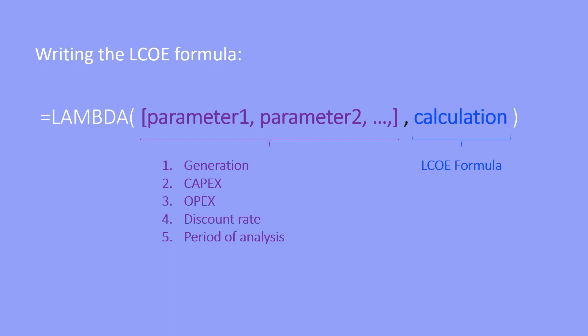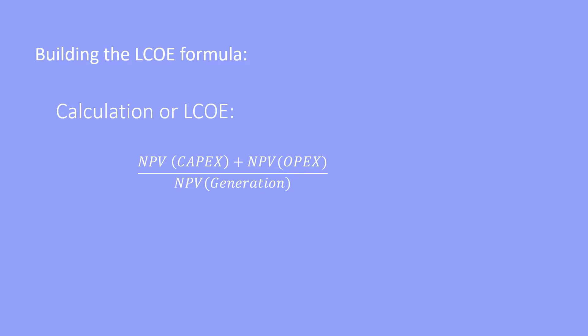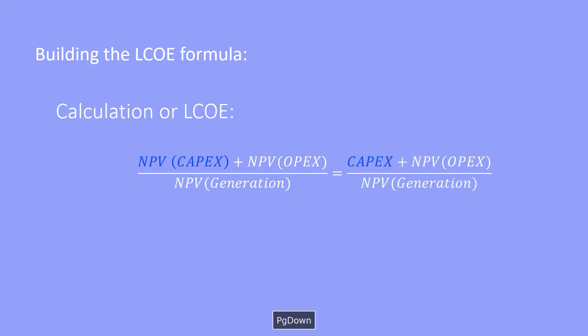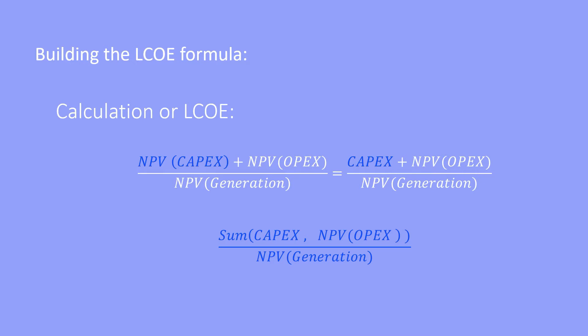The following argument — the calculation — we will need to write the LCOE formula in a format that Excel can read and calculate. We know from previous videos that the LCOE is equal to the NPV of CAPEX plus the NPV of OPEX divided by the NPV of generation. As it is now, it is still not possible to calculate the LCOE because the Lambda function cannot calculate the NPV of OPEX and the NPV of generation.